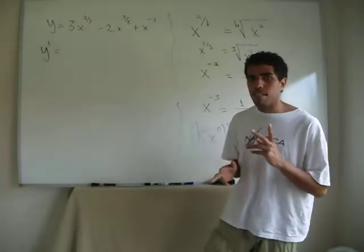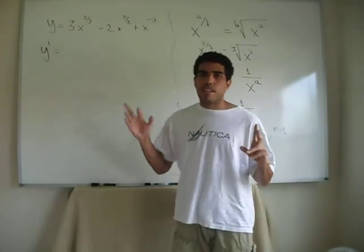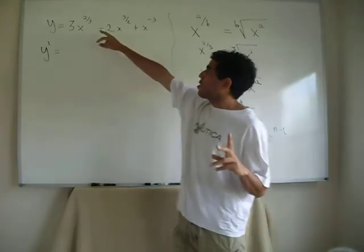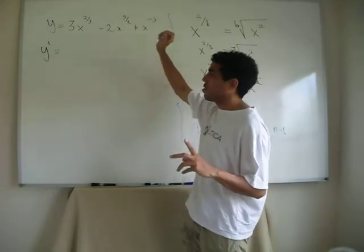Probably a few of you are freaking out and saying, well, what do we do with those rational things? What do we do with that negative exponent right there? Two-thirds, five halves, minus three.